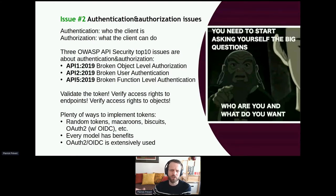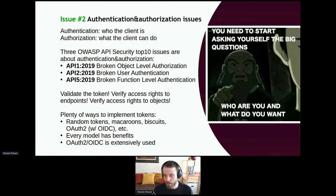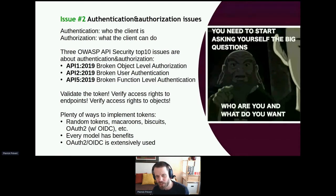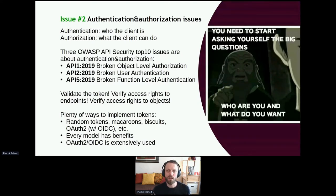BOLA occurs when an API uses an ID to manipulate objects — like a car ID — without checking whether the person making the call is actually authorized to retrieve or modify that specific object. This must be done at the application level: always verify that the token represents authorization for this specific object, whether the person is the owner or has the appropriate access rights.